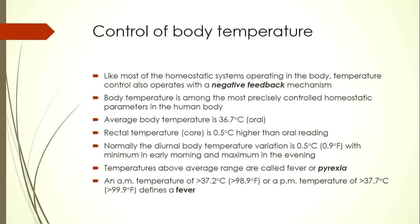Briefly, we will discuss the physiology of the body temperature control system. Like most homeostatic systems operating in the body, temperature control also operates via a negative feedback mechanism, in which the end product or output of a system causes inhibition of the system itself. Body temperature is among the most precisely controlled homeostatic parameters in the human body, because most metabolic functions highly depend upon a normal ambient temperature, and even minor variations can cause drastic changes in metabolic functions.